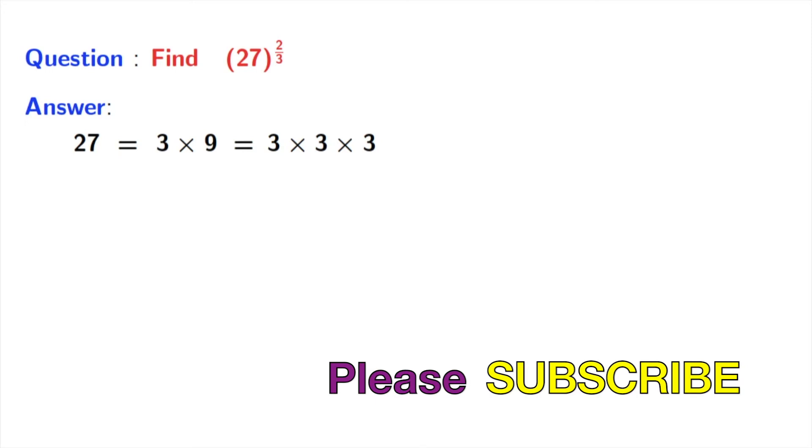Now, we will take power 2 by 3 on both sides. And taking that, we have 27 power 2 by 3 is equal to 3 times 3 times 3 power 2 by 3.